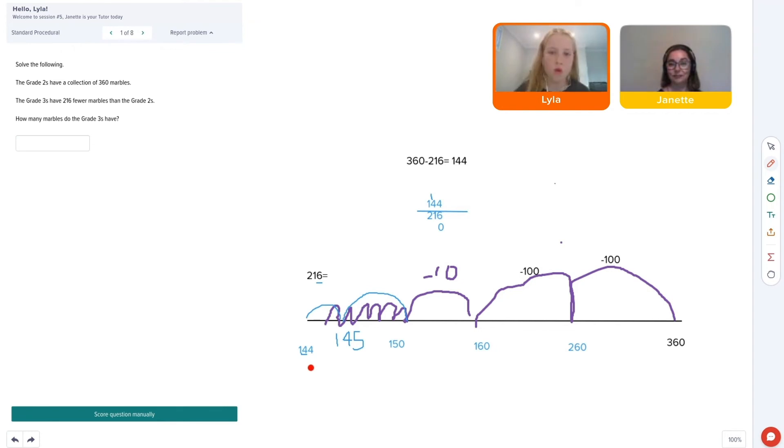So you just swap it around, like, 144 plus 216 equals 360.